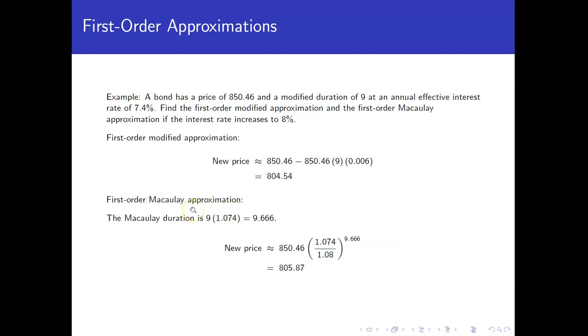Using our first order Macaulay approximation, the first thing we have to figure out is what the Macaulay duration is because we were given the modified duration. At the interest rate that we were given, the starting interest rate, the Macaulay duration will be 9 times 1 plus i, so 9 times 1.074, which is 9.666. Using that first order Macaulay approximation formula, it's price at the original interest rate times the quotient of 1 plus the original over 1 plus the new, and then raised up to the Macaulay duration. If we do that one, we get $805.87.